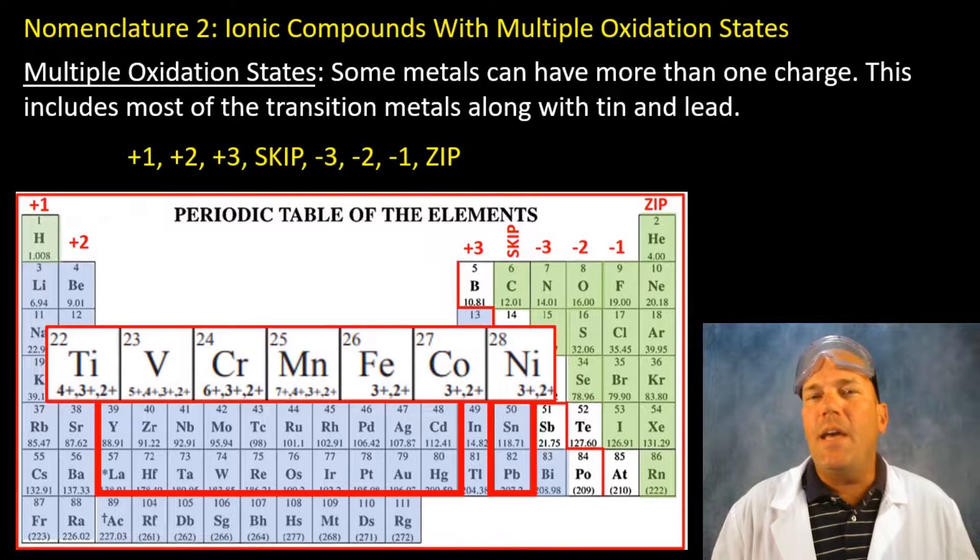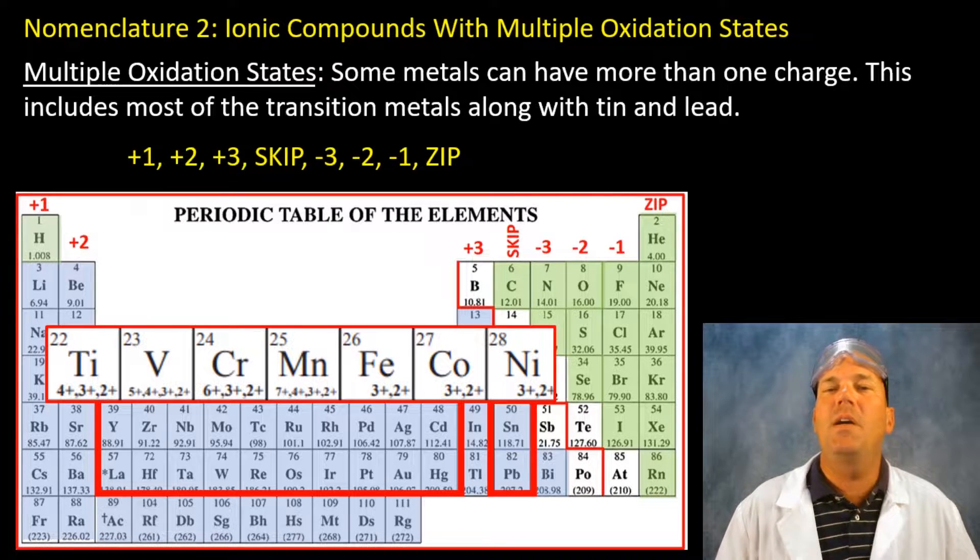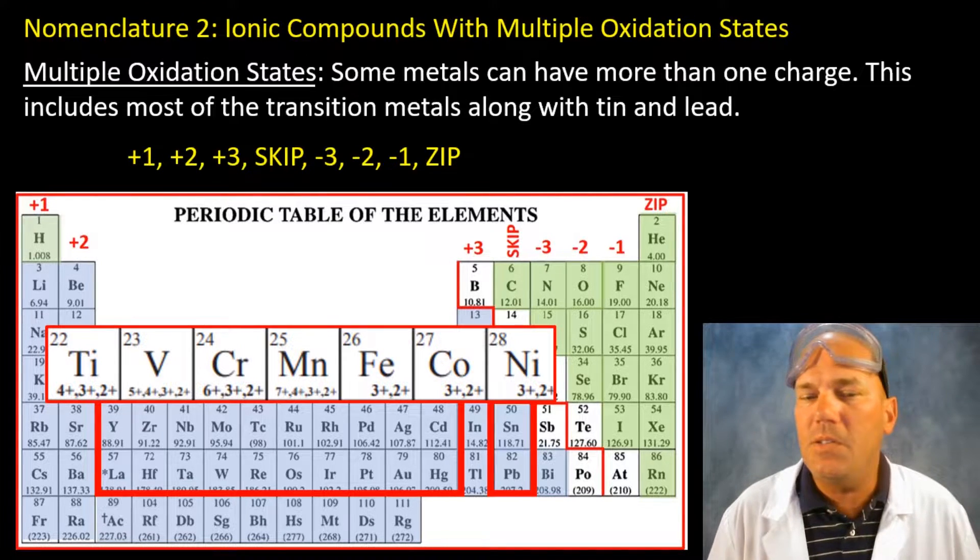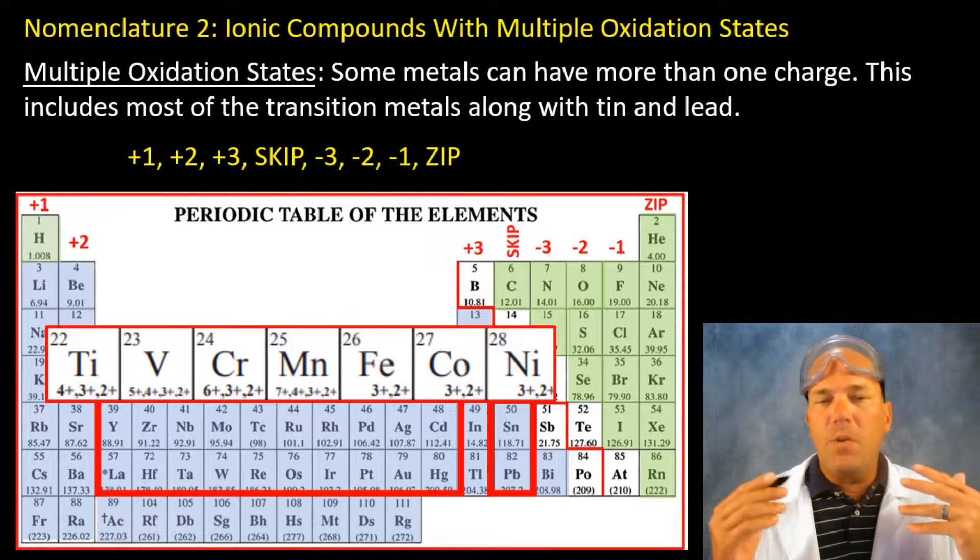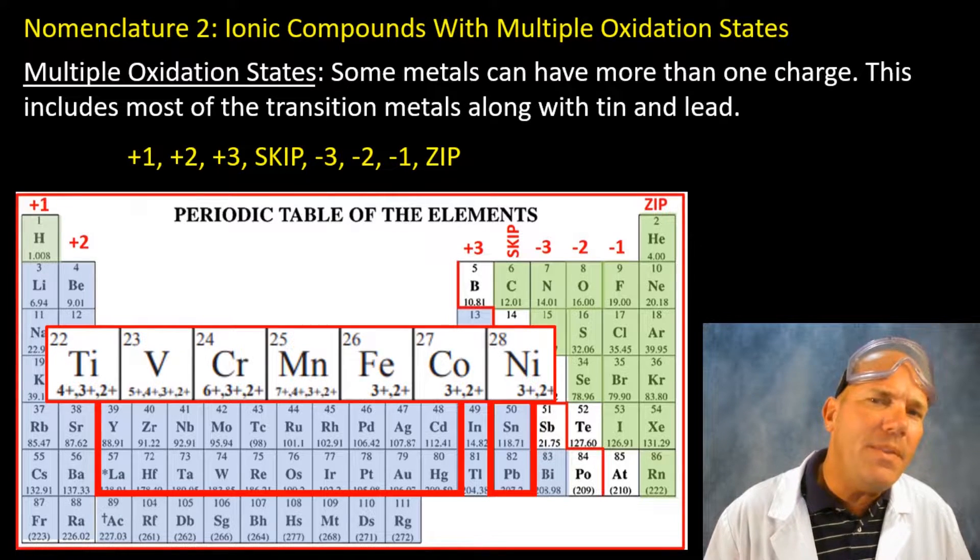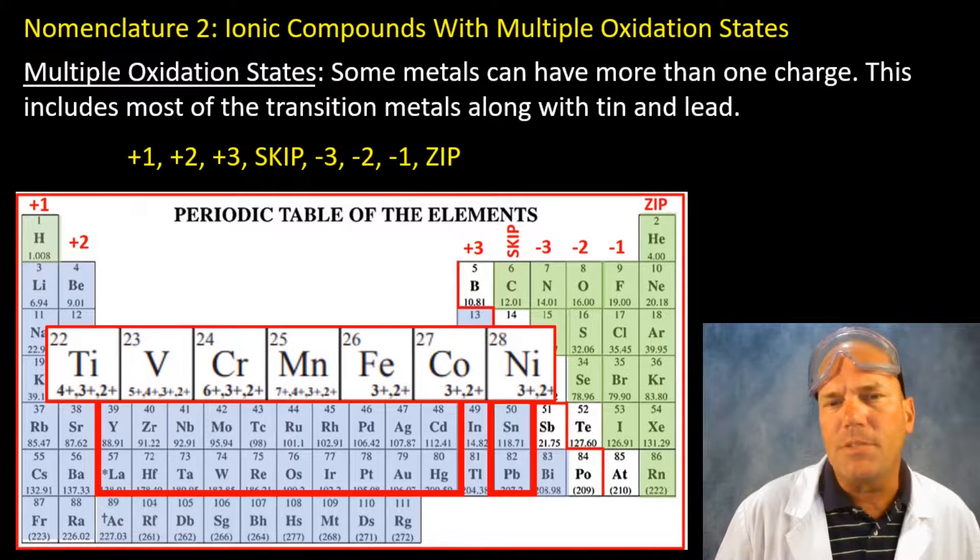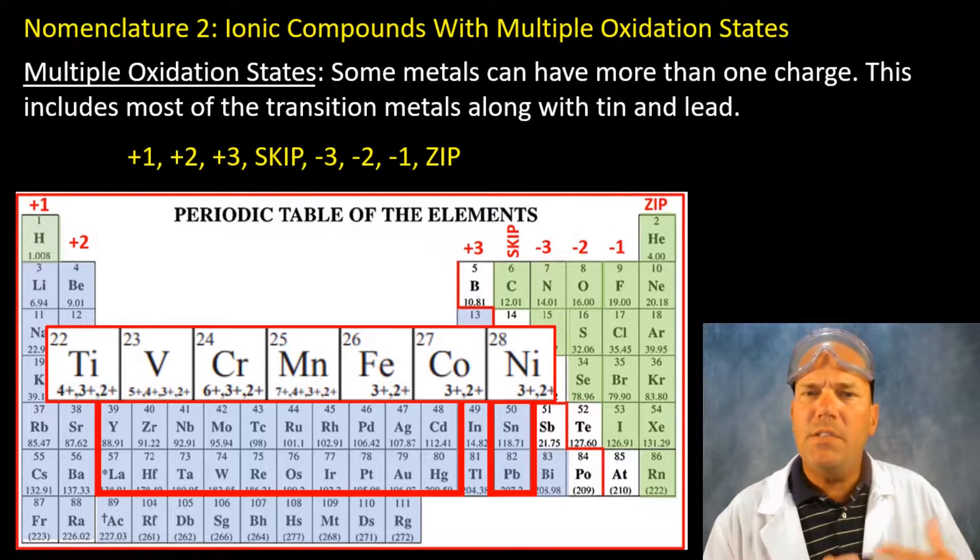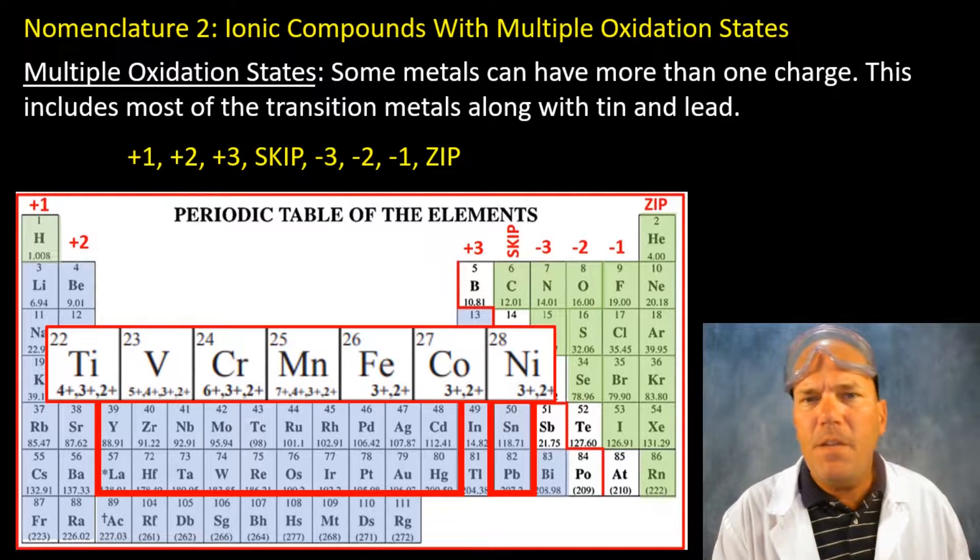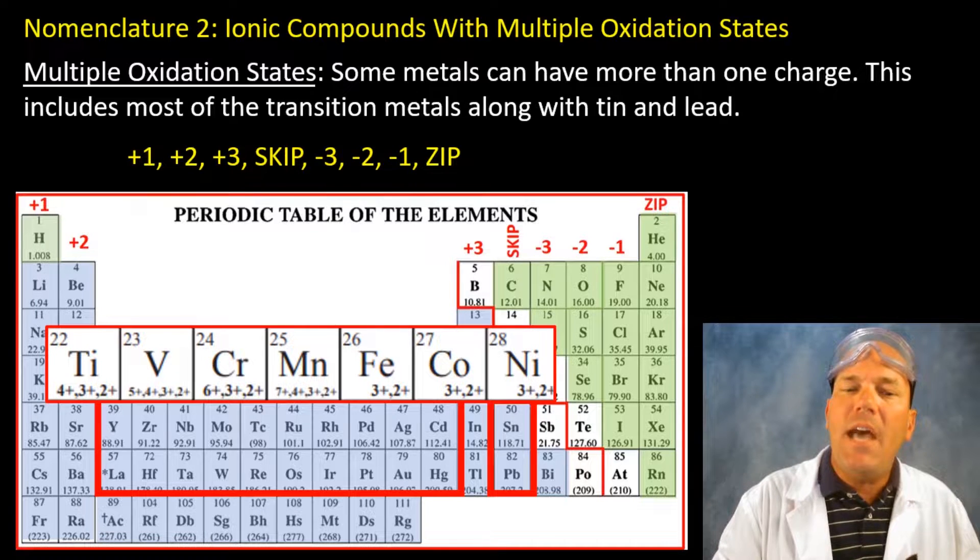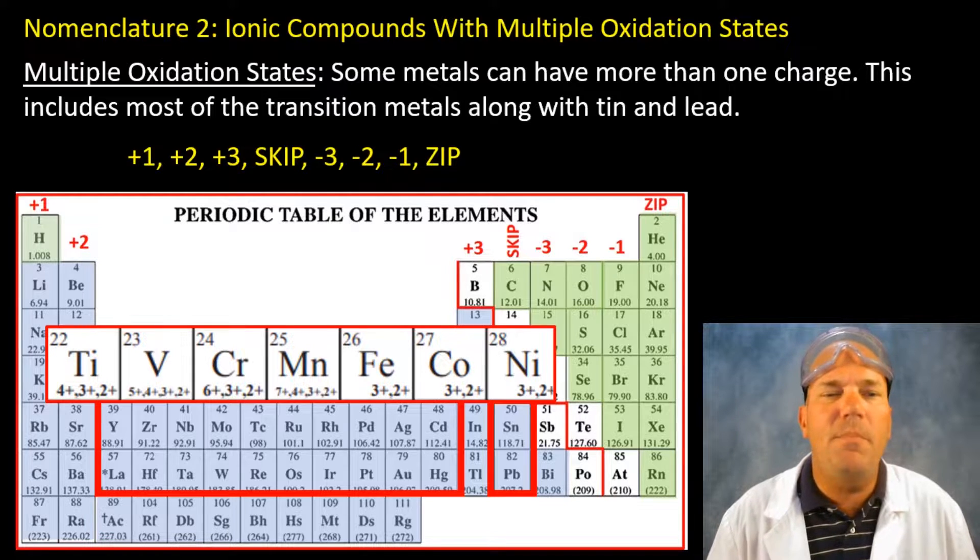If we zoom in now into the transition metals this is just one example of how these metals can have more than one oxidation state. So we're going to be using a slightly different method for naming and writing these ionic compounds. They're still ionic because they're still composed of a metal, a species to the left of the stairs, and a non-metal, a species to the right of the stairs.